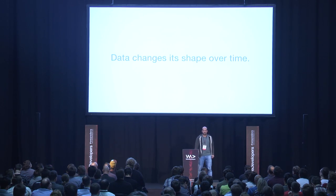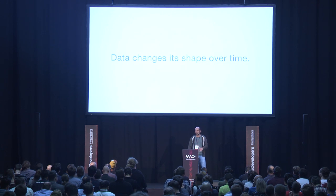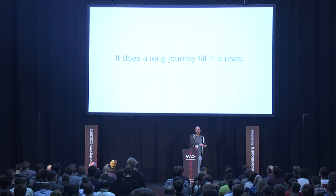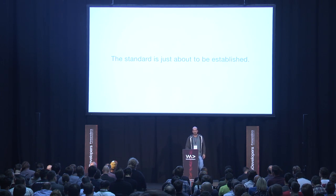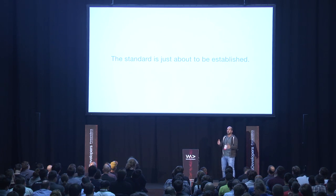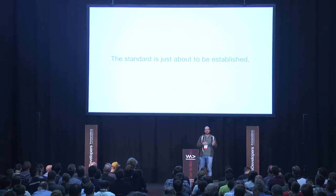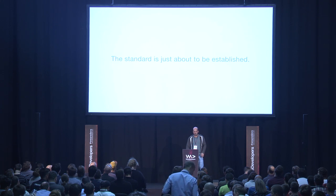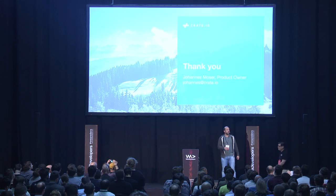In conclusion: data changes its shape over time. Something very important we've seen is that a lot of transformation is going on and a lot of tools work with this data. It's really a long journey until it's used — it goes through a lot of applications and a lot of wires until at one point it's truly made use of. We also think that standards are just about to be established. For some things there are already tools and it's obvious what to use in a production setup, but in other areas it's still not clear. There are a lot of new things coming and a lot of other things going away, and that's something that will hopefully evolve over the next couple of years. Thanks a lot, this was my presentation. Do you have any questions? Ask them now, afterwards, or write me an email.